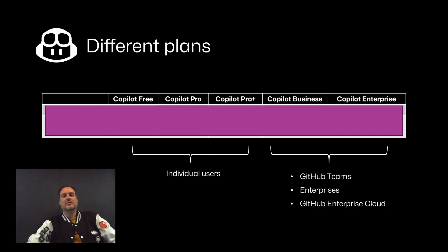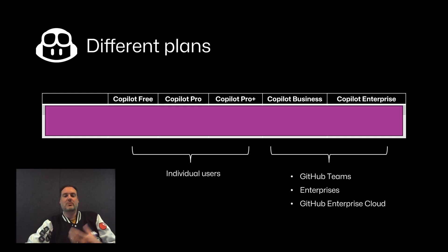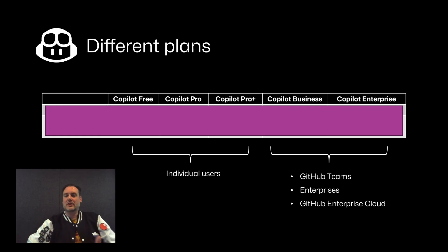Before we get started, we first need to understand the different plans available for GitHub Copilot. We have Copilot Free, Copilot Pro, and now Copilot Pro Plus for individual users. We have Copilot Business and Copilot Enterprise for teams and enterprises. If you have a GitHub Enterprise Cloud account, you will get a Business or Enterprise license.